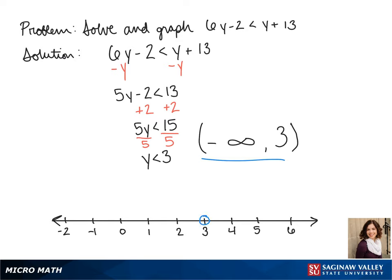To graph we draw an open circle on 3 and we draw our arrow pointing to anything lower, so to the left.